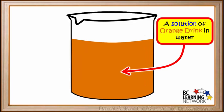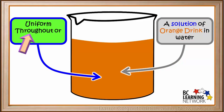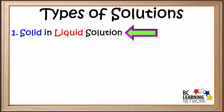Now what we have is a solution of orange drink in water. We see the mixture is uniform throughout, or homogeneous, so that means it's a true solution. Because we dissolved a solid in a liquid, we call this a solid in liquid solution.